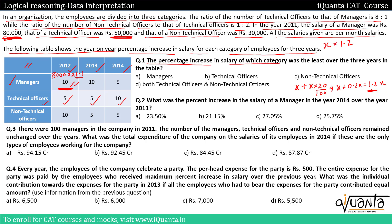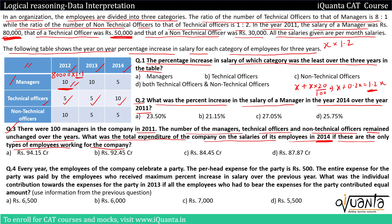The first question asks: the percentage increase in salary of which category was the least over the three years? The second question: what was the percentage increase in salary of a manager in 2014 over 2011? The third question: if there were 100 managers in 2011 and the number of employees remained unchanged, what was the total expenditure on salaries in 2014? We need to find the number of employees and their salaries across years.